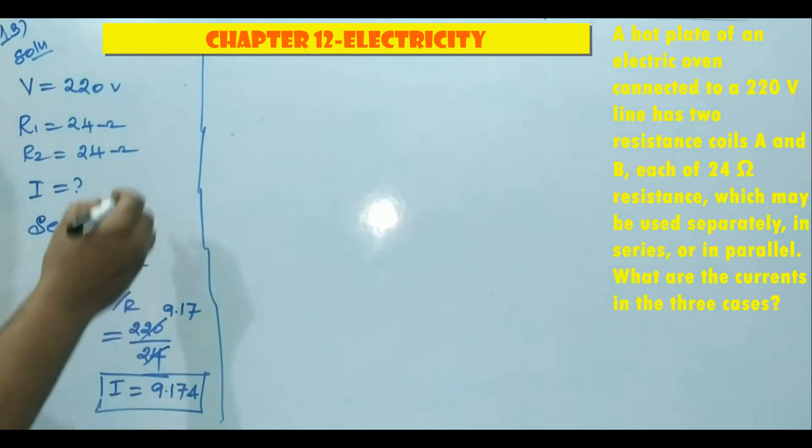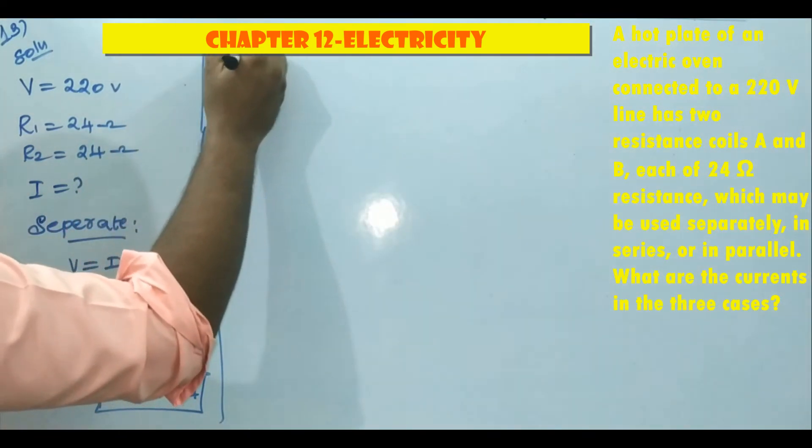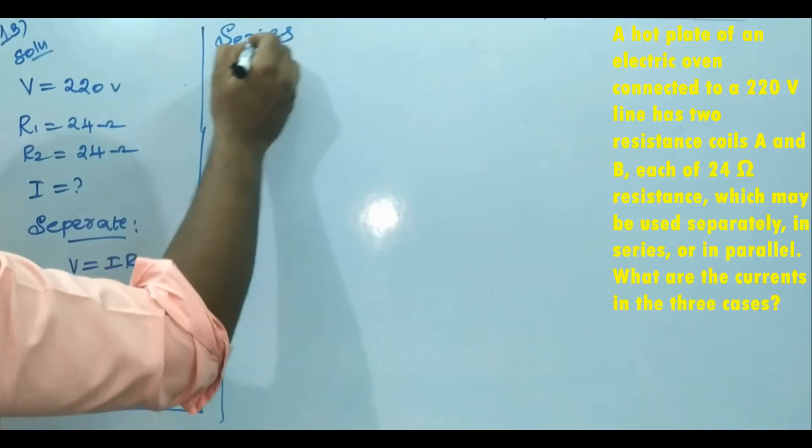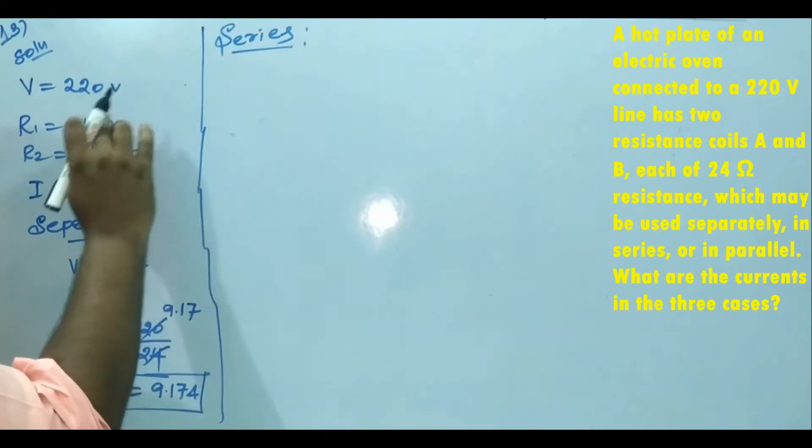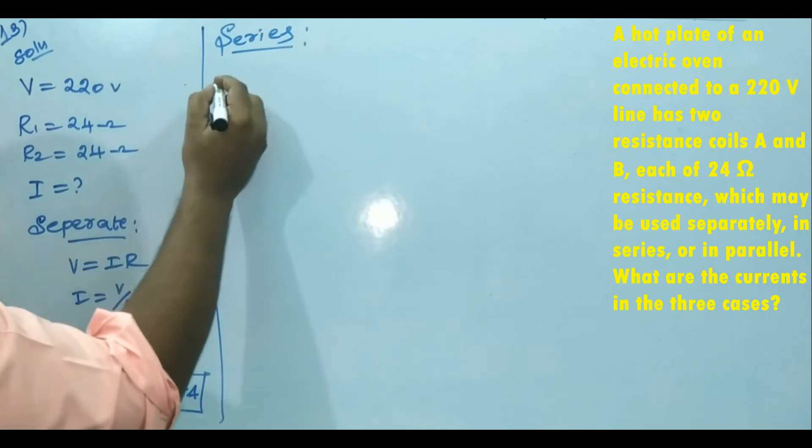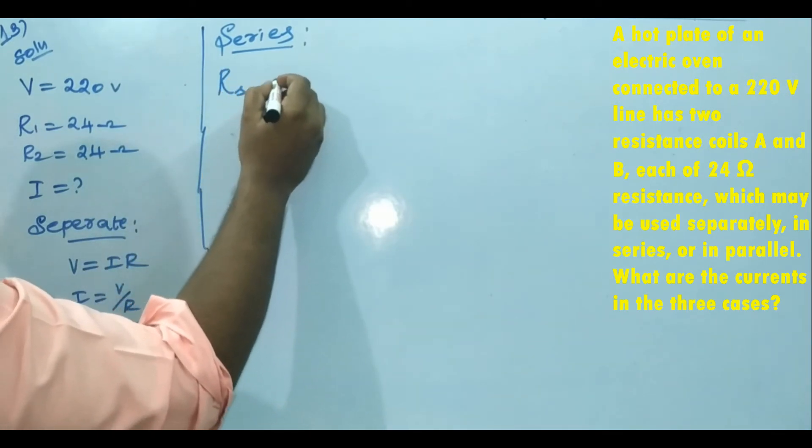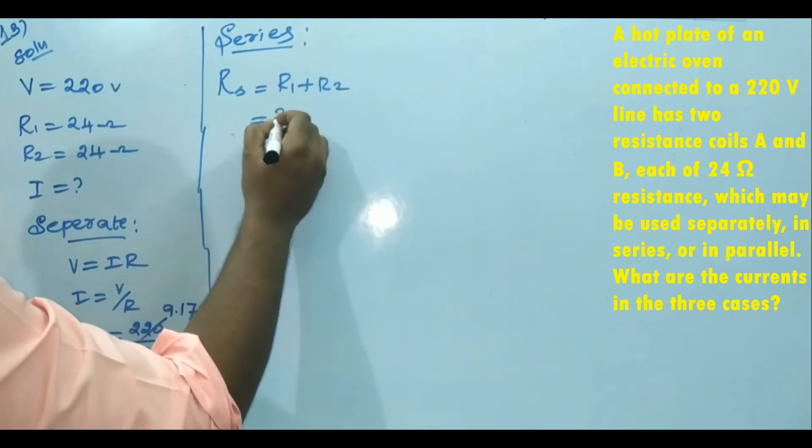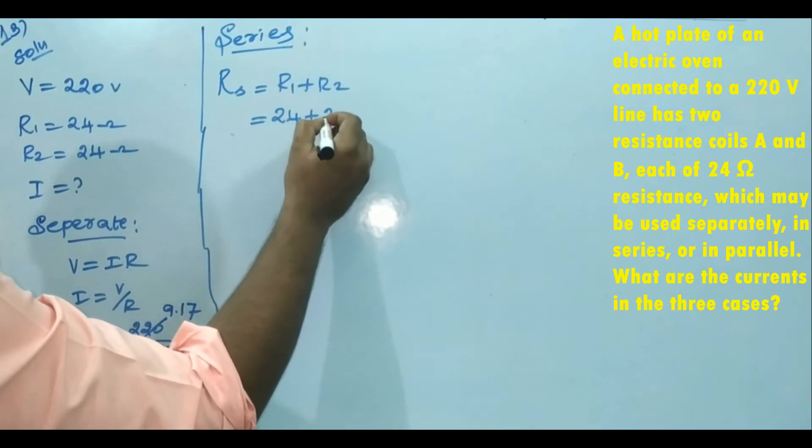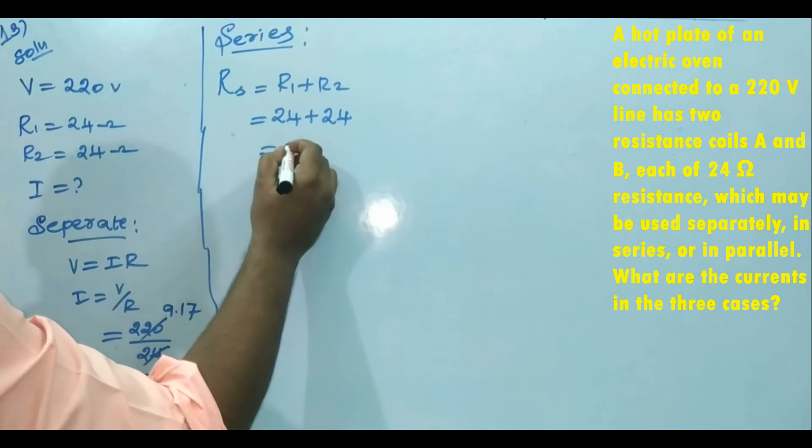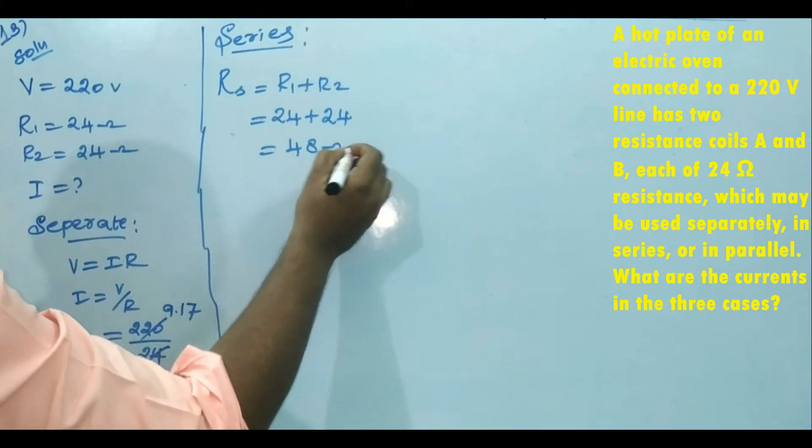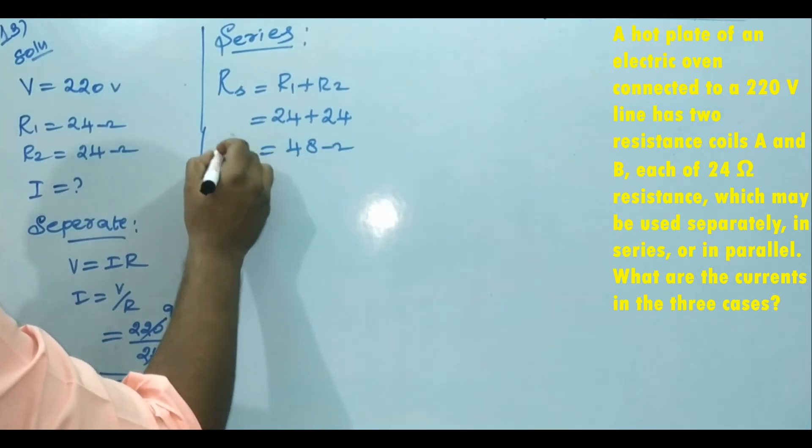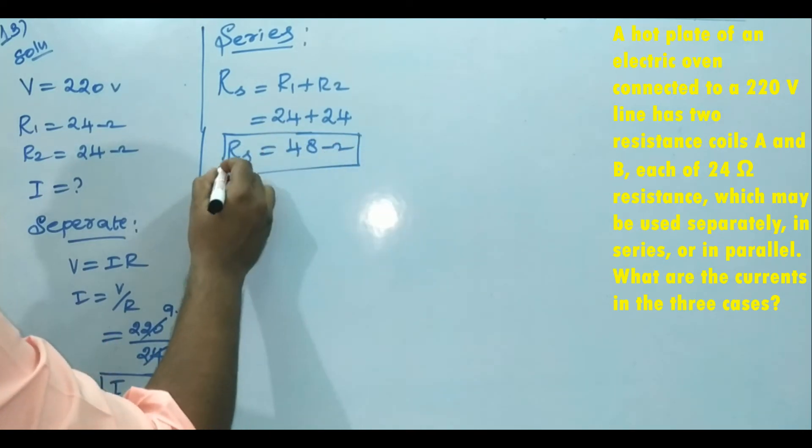Next, if we connect resistances in series, then the equivalent resistance formula, resistance in series is R1 plus R2. 24 ohm plus 24 means 48 ohm. So the equivalent resistance in series is 48 ohm.